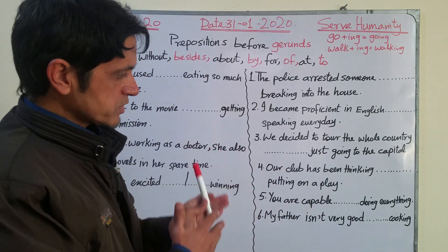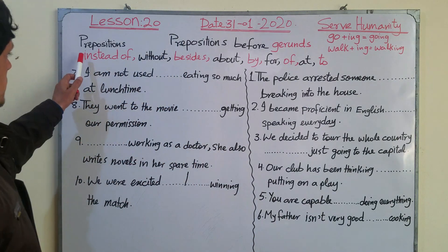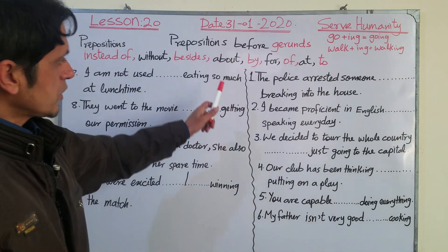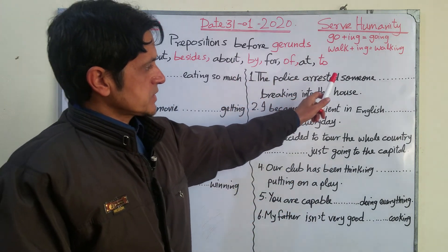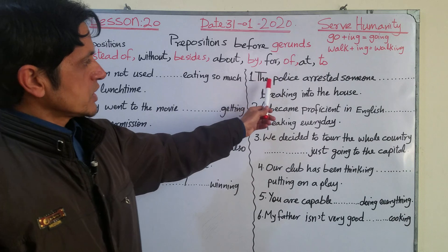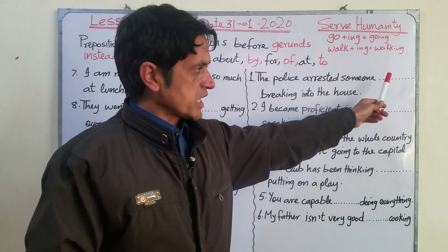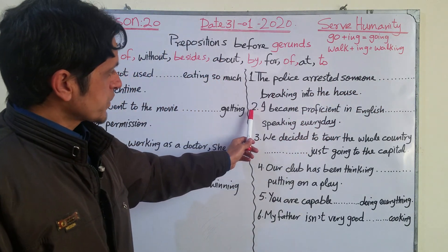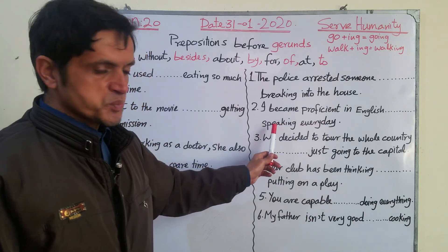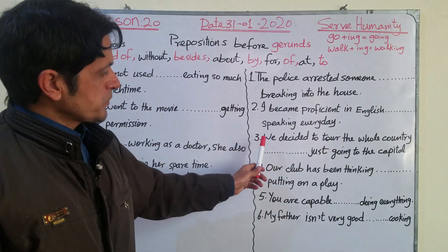After completing, check your answers against mine to see how much you know about prepositions. Here are the prepositions to choose from: instead of, without, besides, about, by, for, of, at, to. Number one: 'The police arrested someone ___ breaking into the house.' Number two: 'I became proficient in English ___ speaking every day' — 'speaking' is the gerund here.